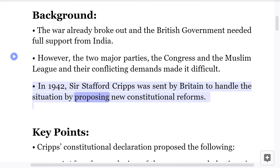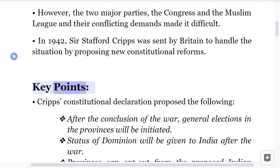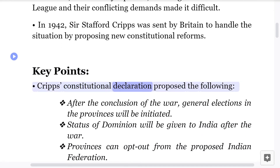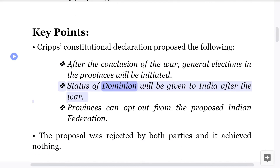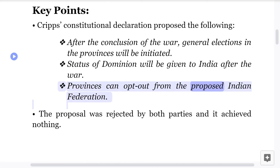In 1942, Sir Stafford Cripps was sent by Britain to handle the situation by proposing new constitutional reforms. His constitutional declaration proposed the following: after the conclusion of the war, general elections in the provinces would be initiated, the status of dominion would be given to India, and provinces could opt out from the proposed Indian federation.